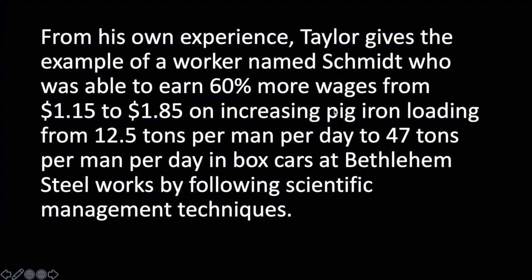From his own experience, Taylor gives the example of a worker named Smith who was able to earn 60% more wages — from $1.15 to $1.85 — by increasing pig iron loading from 12.5 tons per man to 47 tons. Comparing 12.5 to 47 tons, it is almost 4 times the output. He conducted this technique in his own company, Bethlehem Steelworks, as discussed in the life sketch of Taylor.